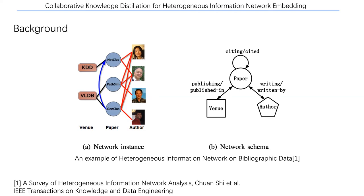So, returning to metapaths — as described, they can be treated as different views of the same HIN. We can borrow the idea from mutual learning and mutual information maximization across views. We aim at learning HIN embedding by deep mutual knowledge distillation. Here is the overall framework of our proposed method, named Collaborative Knowledge Distillation, or CKD. The overall framework can be divided into four parts: heterogeneous information network input, metapath-based network construction, context graph sampling, and knowledge modeling.